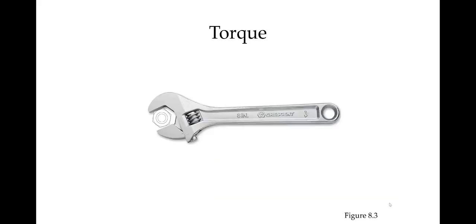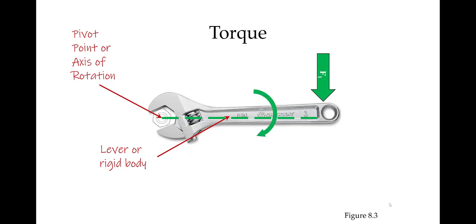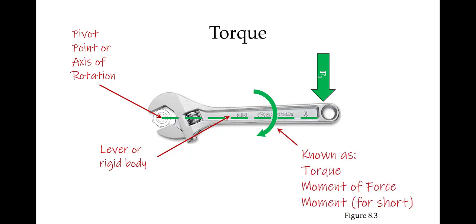Consider the wrench. We can think of that wrench as a lever or a rigid body. Whenever a force is applied some distance from the axis of rotation, or pivot point, it will create the turning effect on that wrench. That turning effect is known as torque, or the moment of force, or just moment for short.